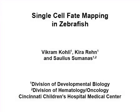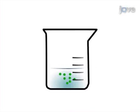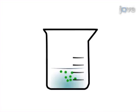The overall goal of the following experiment is to perform fate mapping and lineage tracing of selected single cells in zebrafish embryos. This is achieved by chemically conjugating caged fluorescein to high molecular weight dextran.